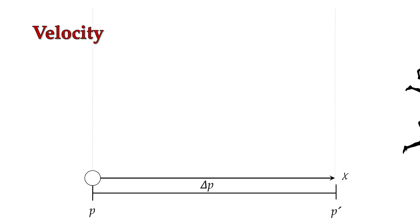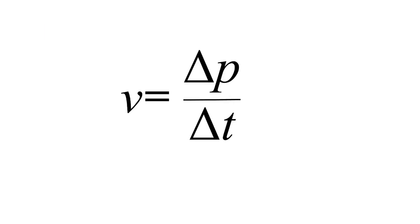Velocity ends up being our change in position divided by our change in time. With this one equation, we can determine a lot of different things. For example, if we want a greater velocity, we either need a larger displacement for the same amount of time, or a smaller change in time for the same displacement.